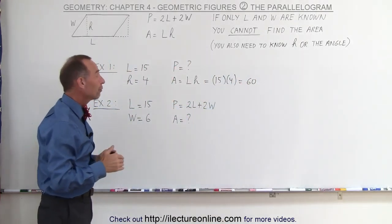However, if they're asking you for the perimeter, you cannot find it by only knowing the length of the long side and the height. You also need to know the length of the short side, W, or you cannot find the perimeter, so this will remain unknown.